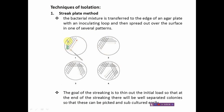In the streak plate method, the bacterial mixture is transferred near one end of the agar plate, and with the help of an inoculating loop it is spread over the surface of the agar in one of several different patterns. The pattern shown here is called the quadrant streak. First, a smear is prepared and from the smear the bacteria are spread over the agar surface. In the four-quadrant streak method, the loop is sterilized between each quadrant and the streaking continues from quadrant one through to quadrant two.